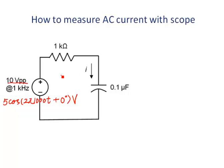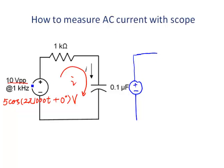Our target is to measure the AC current. First, let's try to calculate the current theoretically. We know for the sinusoidal steady-state current there are two important pieces of information: the magnitude and phase angle. Let's convert the circuit into phasor domain. The voltage is 5∠0° volts.